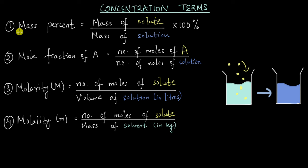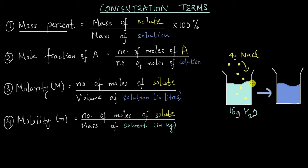The first term is mass percent. Let's say I'm adding 4 grams of NaCl into 16 grams of water, and this gives me a solution. This NaCl is what we call the solute, shown in yellow here, and the water in which we are dissolving NaCl is what we call the solvent — the dissolving medium. The substance dissolved, sodium chloride, is the solute.